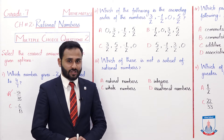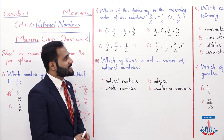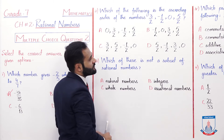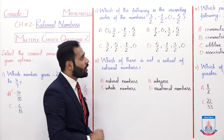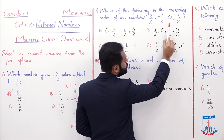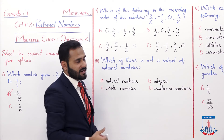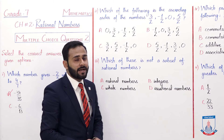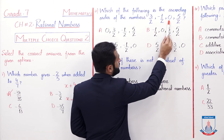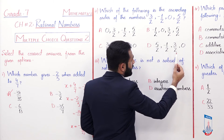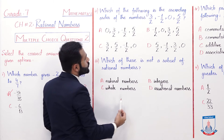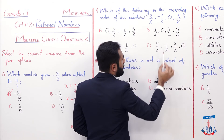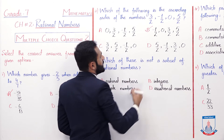Inko aapne ascending order mein arrange karna hai. Aapko different options yahan par given hain. Ascending order — agar hum yahan par observe karein, to ek value negative mein hai: minus 1 by 2. That means hamara ascending order start hoga negative se, minus 1 by 2 se. Uske baad, sab ki denominators 2 hain aur 0 ek rational number hai. Since sab ki denominators 2 hain, hum numerators compare kar sakte hain. So first: minus 1 by 2, then 0. Phir 3 jo 5 se smaller hai, so 3 by 2 pehle aur 5 by 2 baad mein aayega. Option B starts from minus 1 by 2, then 0, then 3 by 2, then 5 by 2. So this is the ascending order and B is the correct option.